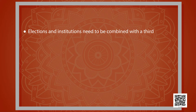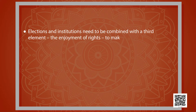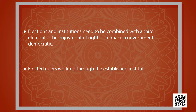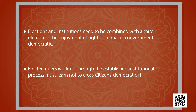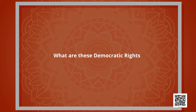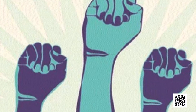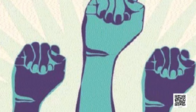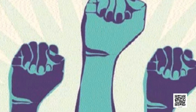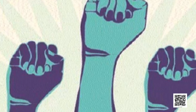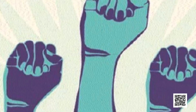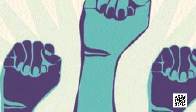Elections and institutions need to be combined with the third element — the enjoyment of rights — to make a government democratic. Elected rulers working through the established institutional process must learn not to cross citizens' democratic rights. Rights are reasonable claims of persons which are recognized by society and sanctioned by law. This means that an unreasonable claim of a person cannot become a right. Moreover, the definition and scope of rights change from one society to another and from one period to another.